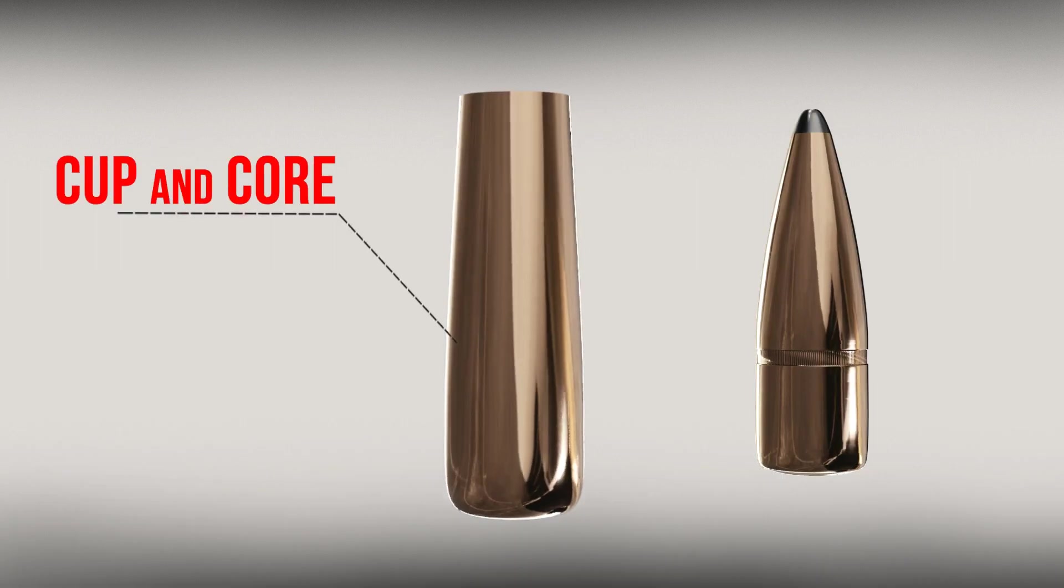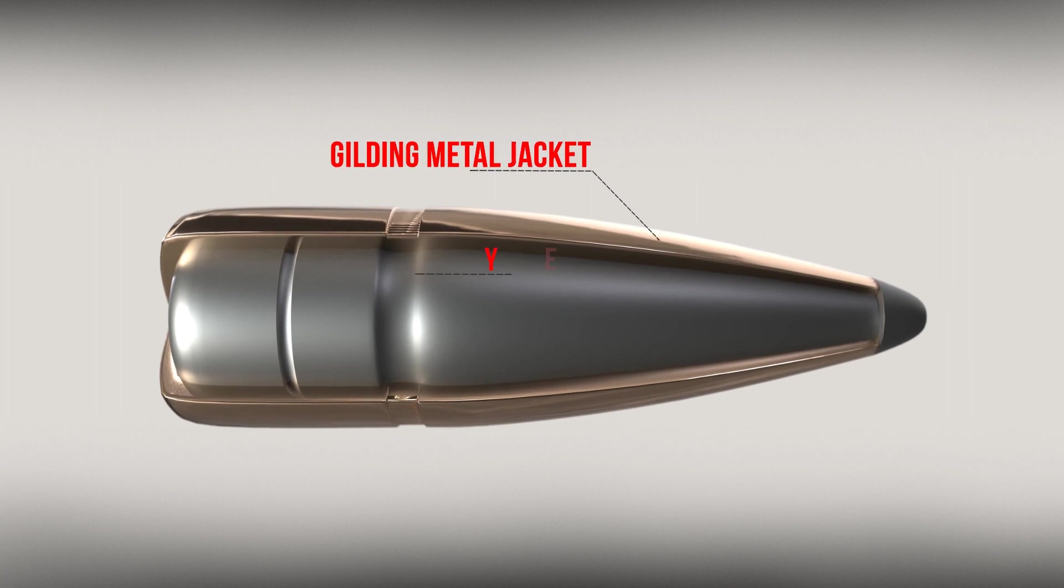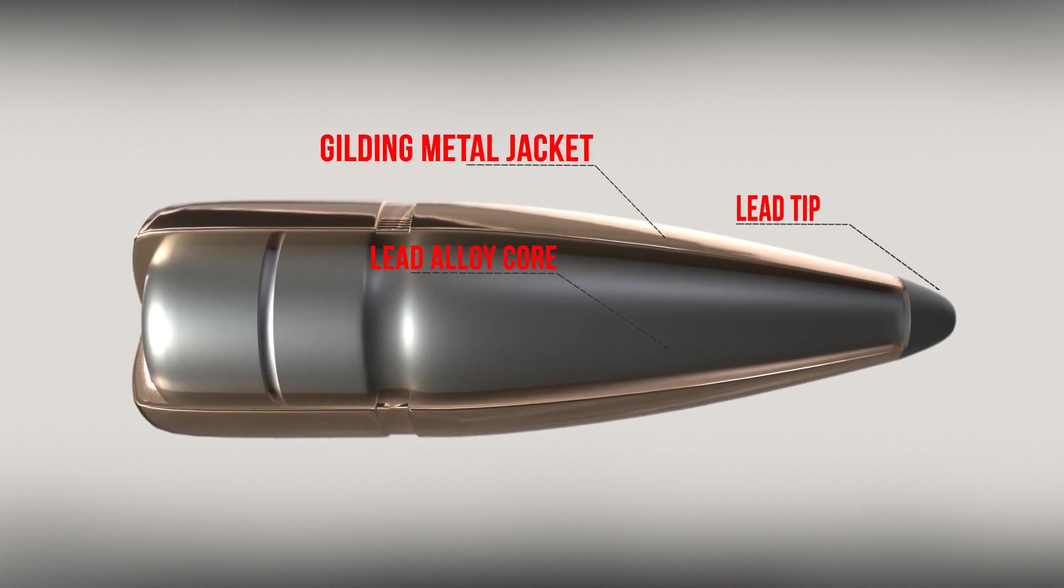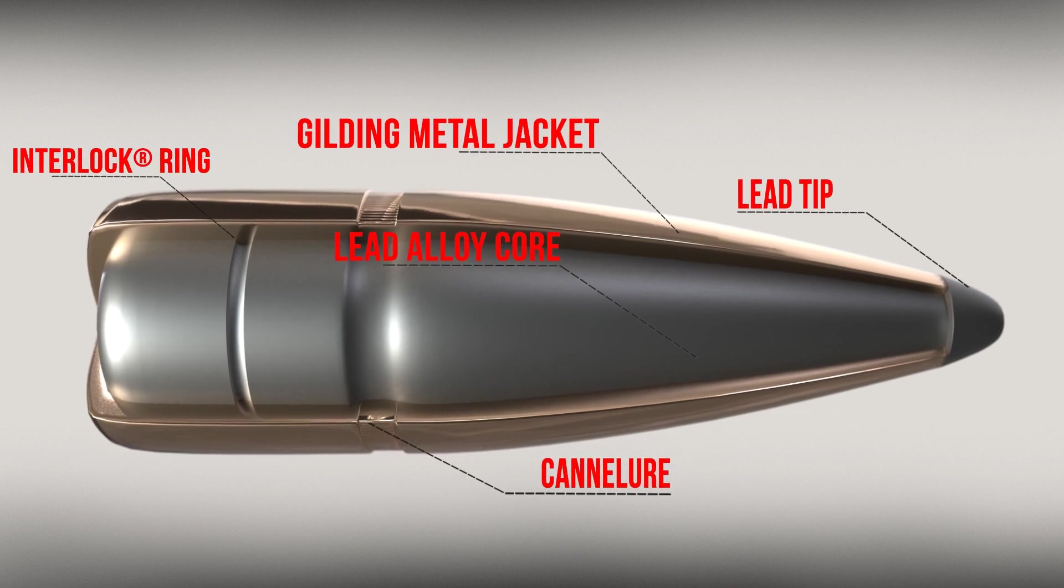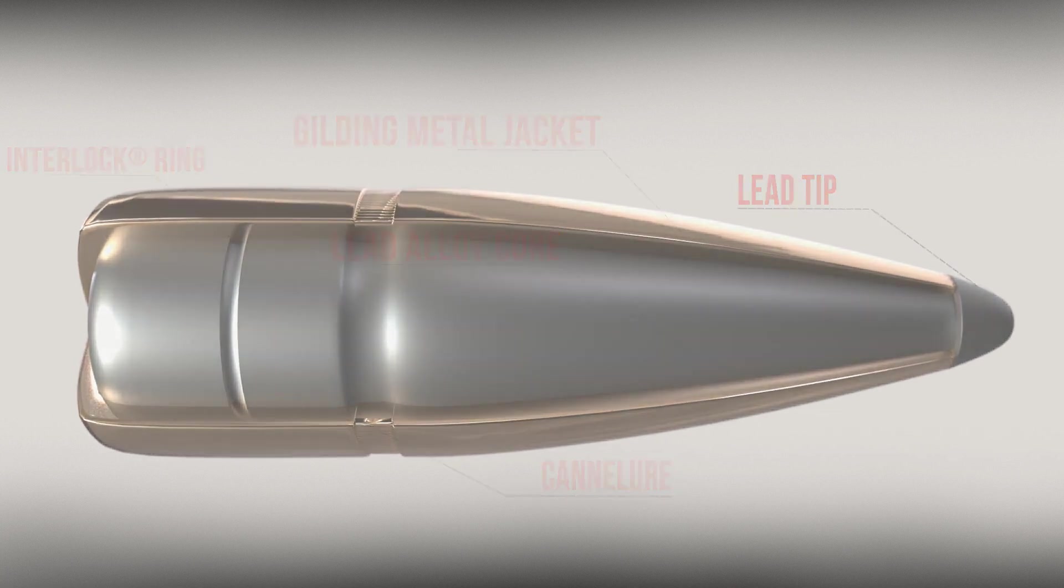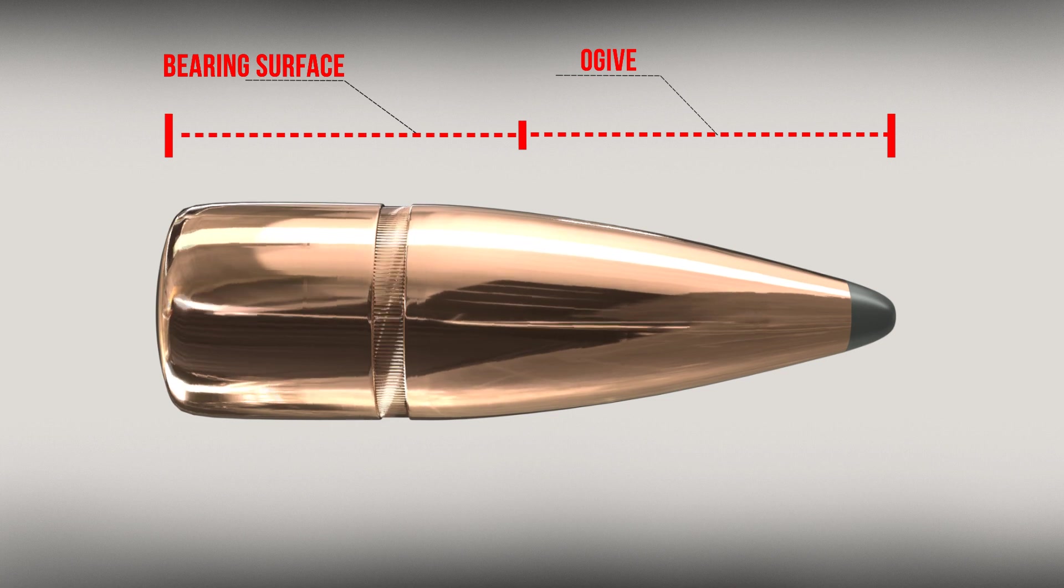Interlock bullets feature a traditional cup and core design with gilding metal jacket, and a one-piece lead alloy core and an exposed lead tip that initiates expansion for excellent terminal performance. Most use the Secant Ogive design to provide an aerodynamic profile while maintaining a long bearing surface.